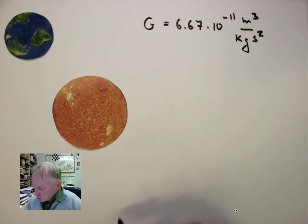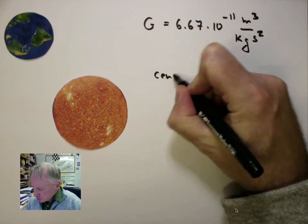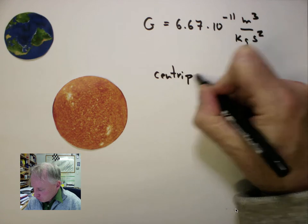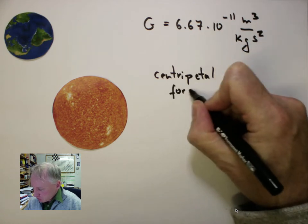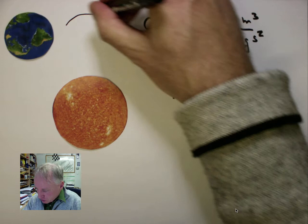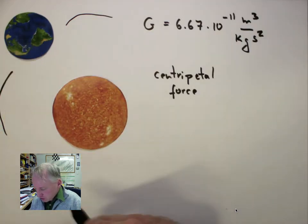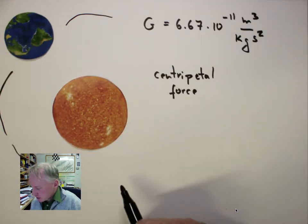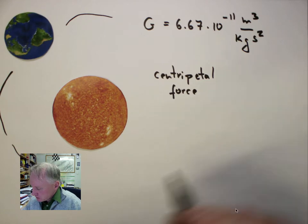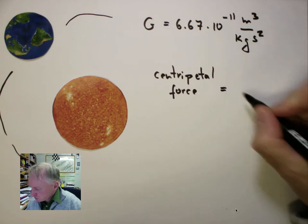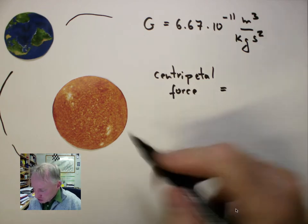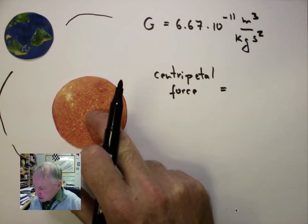Then we can argue that the centripetal force that keeps the Earth on this almost circular orbit, in fact, in reality, it's slightly elliptical, that centripetal force is provided for by the gravitational attraction of the Sun.